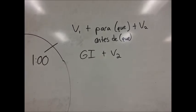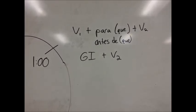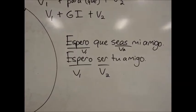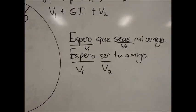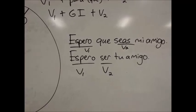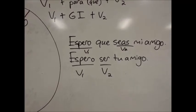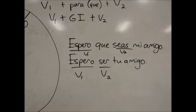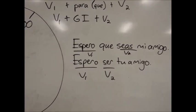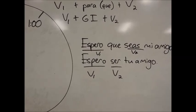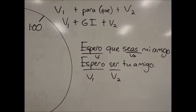There's also something special called a G1 that I'll explain later. It's going to be easier to understand with an example. Here are two examples. Espero que seas mi amigo. Espero is the first verb, V1, and seas is the second verb, V2. You can have V1 and V2 right next to each other also, like espero ser tu amigo.